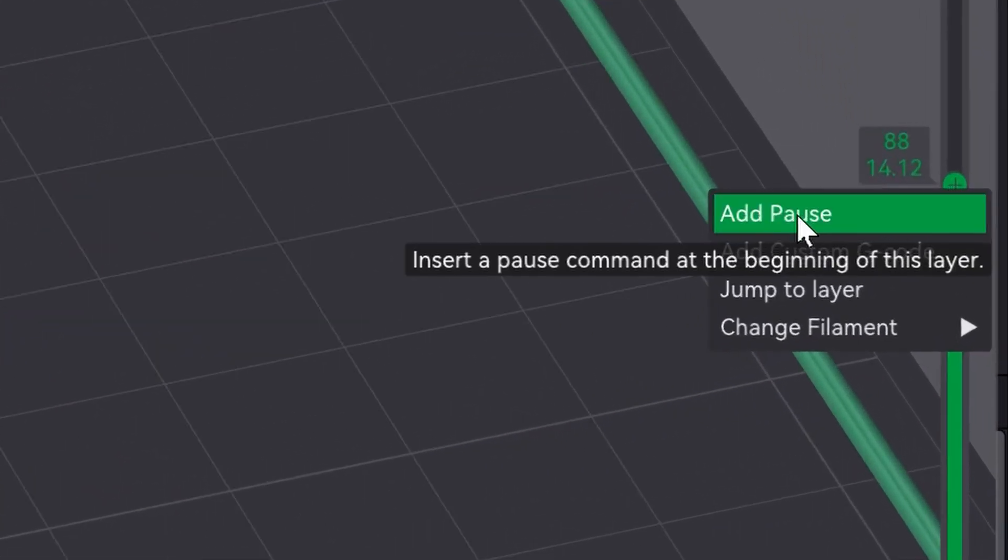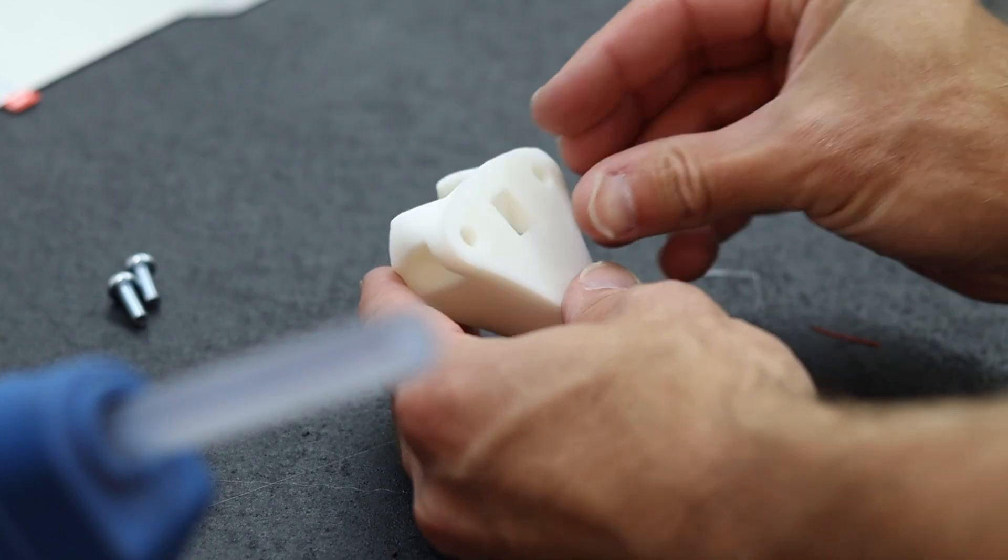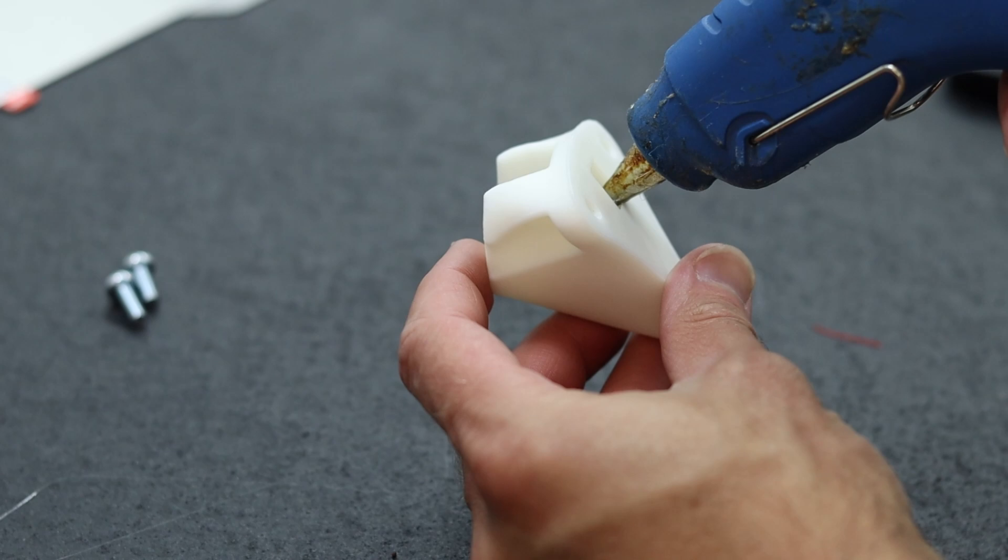Adding magnets into a print could be done with a pause and that would be pretty neat, but instead I'll just add some magnets in through the back and I can glue them in.